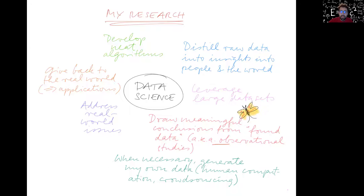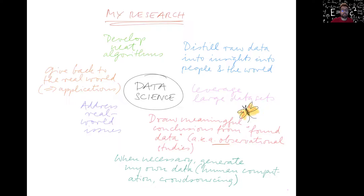Often, analyzing these data sets requires drawing meaningful conclusions from what I call found data. This is not experimentally collected data like a physicist or chemist would do under controlled conditions, but data collected from the world taking its natural course — observational studies rather than experimental. Sometimes we don't have the data we'd like, so we also generate our own data using techniques such as human computation, crowdsourcing, and games with a purpose. Ultimately, we want to address real-world issues, build real applications, and develop neat algorithms.